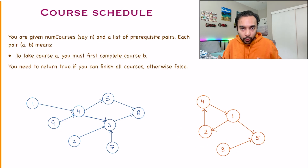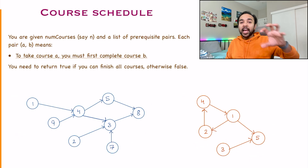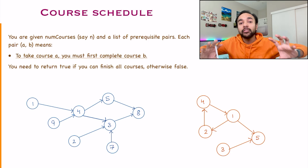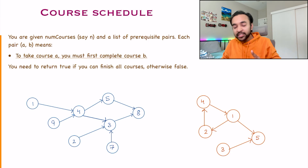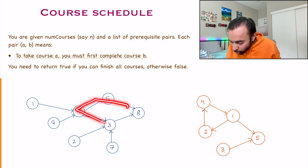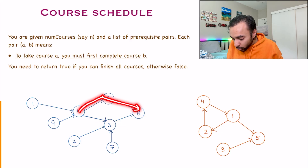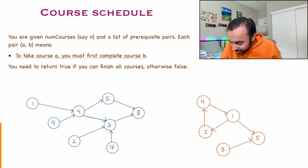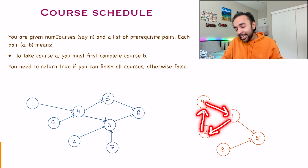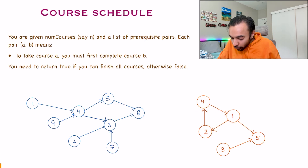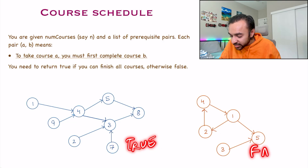So what does the problem boil down to? You are given directed graphs and you have to tell if you are able to traverse all of the nodes. Basically, you have to determine if there is a cycle in the graph or not. Notice that the first case looks like a cycle but is not, because all nodes flow in the same direction. But in the second case, there is a cycle, and that cycle prevents you from taking all the courses — return true for the first, false for the second.